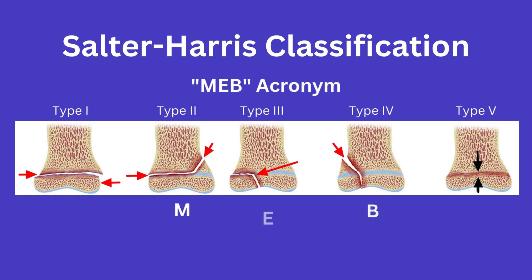Now, the second acronym I was referring to at the beginning of the video is used to remember types 2, 3, and 4 in more detail. Types 1 and 5 are left out of this acronym because it is typically easy to remember that they both involve the growth plate and only differ in severity, with type 5 being a crush injury. The acronym is called MEB — M-E-B — standing for metaphysis, epiphysis, and both.